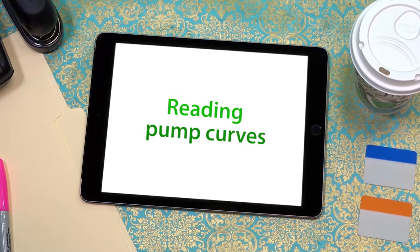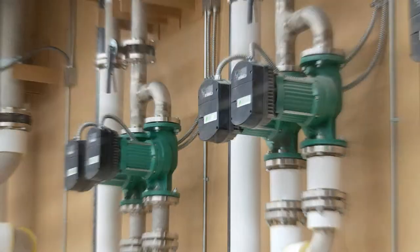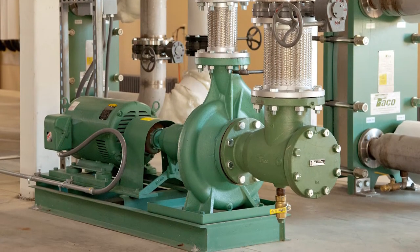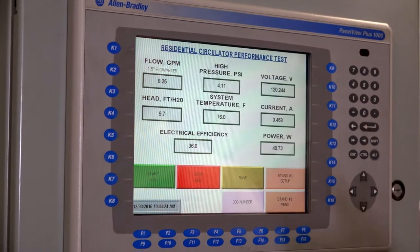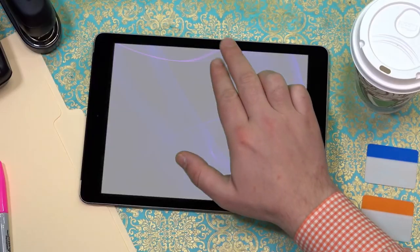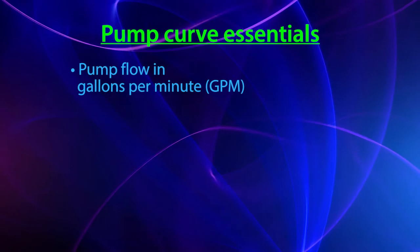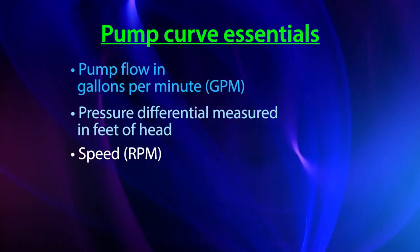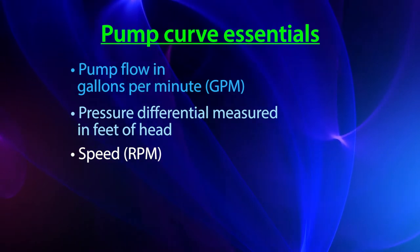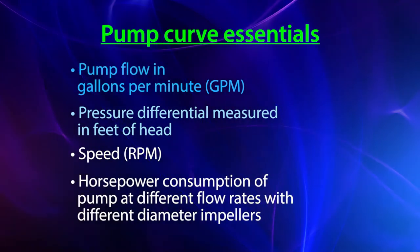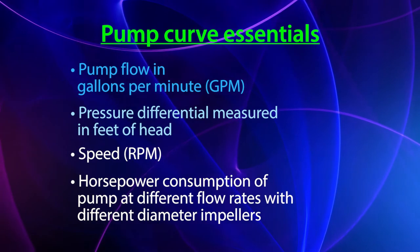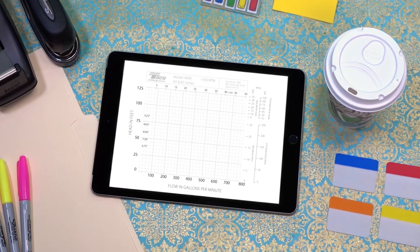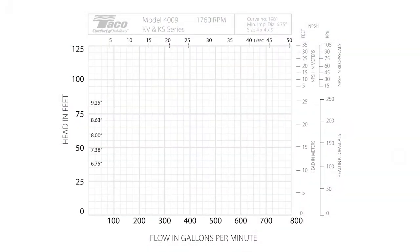To generate a pump curve, we collect physical data from the pump running in the test lab. We mount the pump in a test stand with various instruments and collect the four most important pieces of information: pump flow in gallons per minute, pressure differential measured in feet of head, speed in RPM, and the horsepower consumption of the pump at different flow rates when equipped with impellers of different diameters. We put all this data into a table from which we can plot the pump curve on a chart like this.